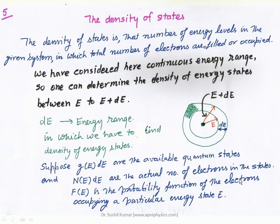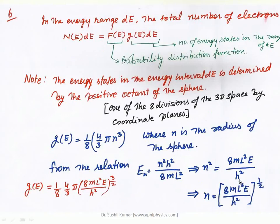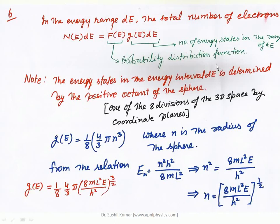F(E) is the Fermi-Dirac distribution function that defines the probability that electrons will be in a particular energy state E. In the range dE, the total number of electrons N(E)dE is defined by multiplying the density of states by the Fermi-Dirac distribution function F(E). The energy states in the energy interval dE are determined by the positive octant of the sphere — one important mathematical point is that we consider an octant of the sphere.